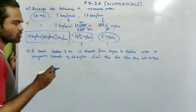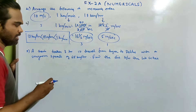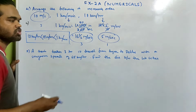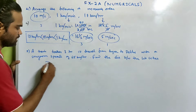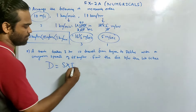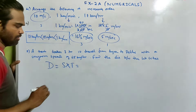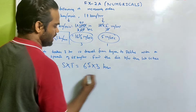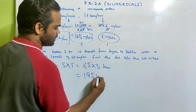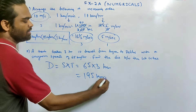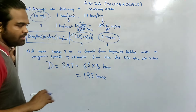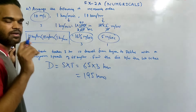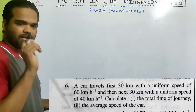Sum 5: a train takes 3 hours to travel from Agra to Delhi with a uniform speed of 65 km/h. Find the distance between the two cities. Distance = speed × time = 65 × 3 = 195 kilometers.